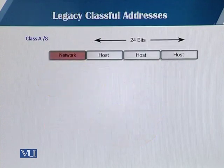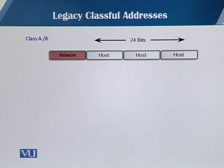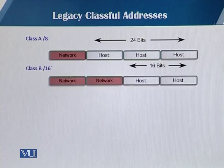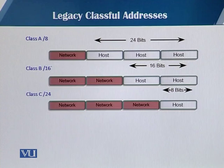Then we have the legacy classful addresses. We have the Class A address, which uses /8, meaning the network part has eight bits. So you have 24 bits for the host portion. Then we have the Class B addresses and Class C addresses.